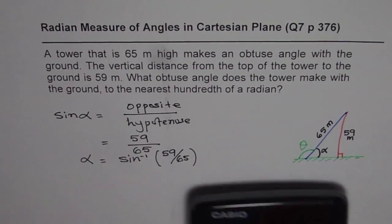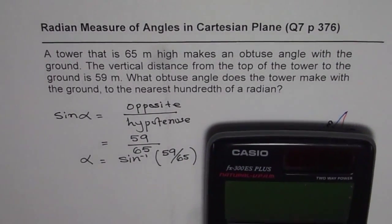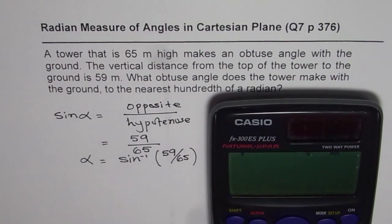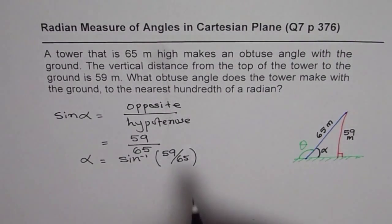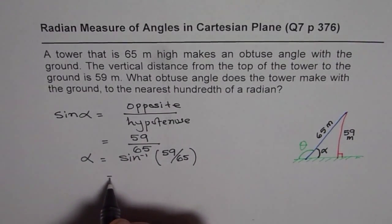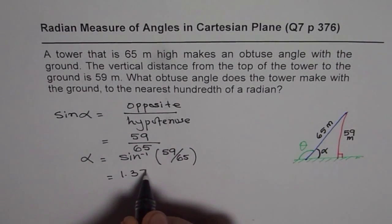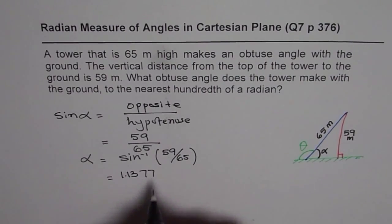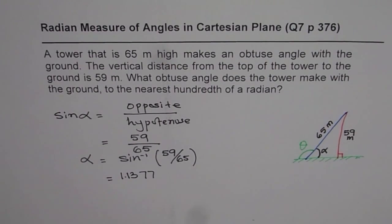You should set your calculator to radians. That is very important. So let us set it to, it is for my calculator it is in radians. We will do second shift that means sine inverse, 59 divided by 65 bracket close equals to 1.1377. So that gives me 1.1377. So that is the value in radians.